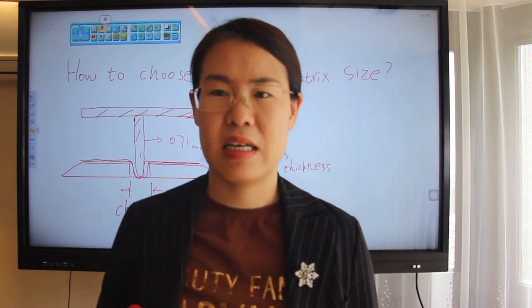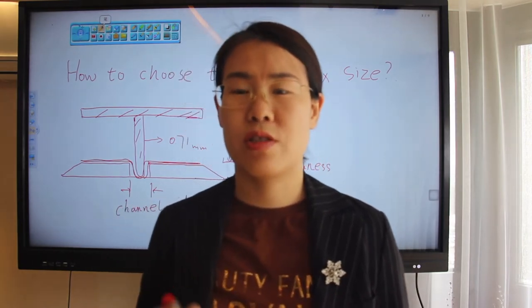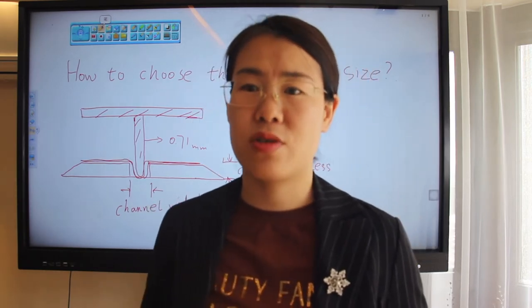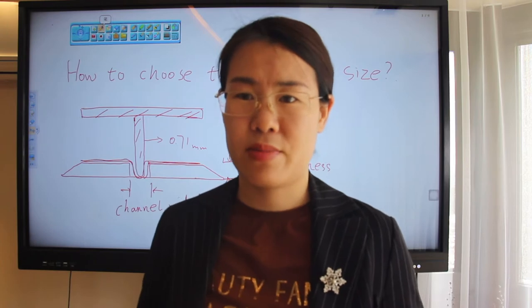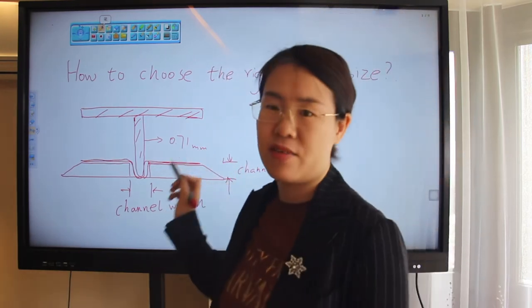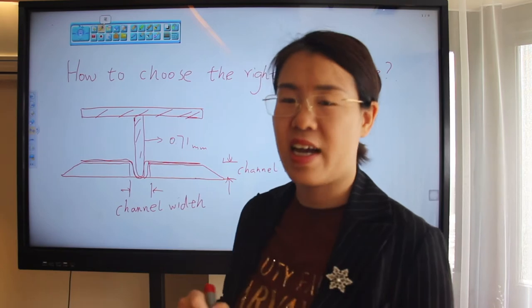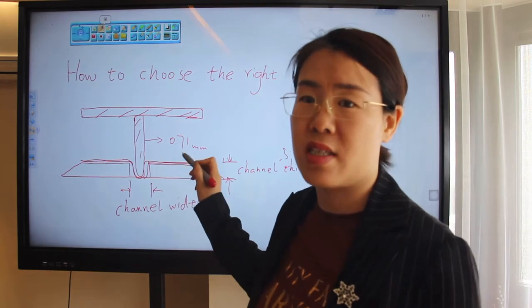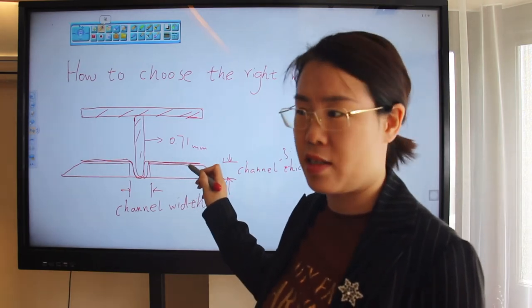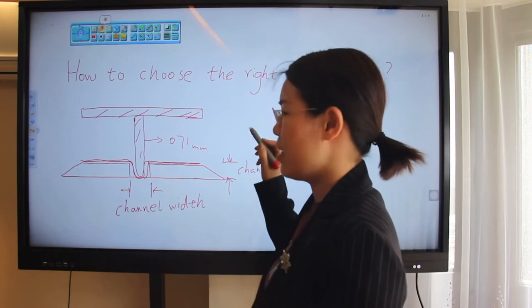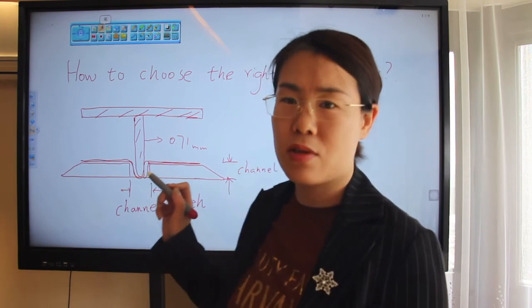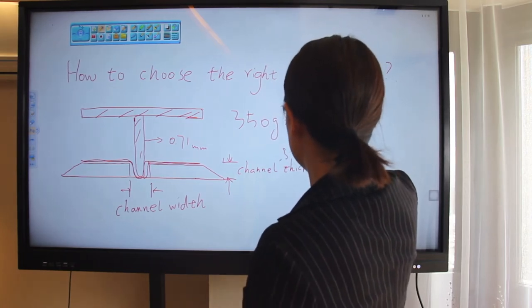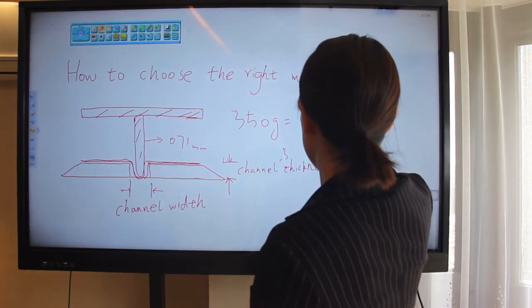So today we're going to teach you how to choose the right crazy matrix size. We will take cardboard 350 grams for example. Look at the board. Normally for cardboard of 350 grams, we choose the GPT-STERO, so that is 0.71 mm thickness. For 350 grams cardboard, the thickness is about 0.5 mm thickness.